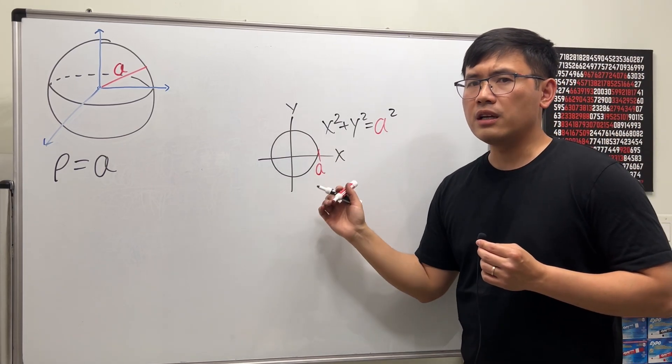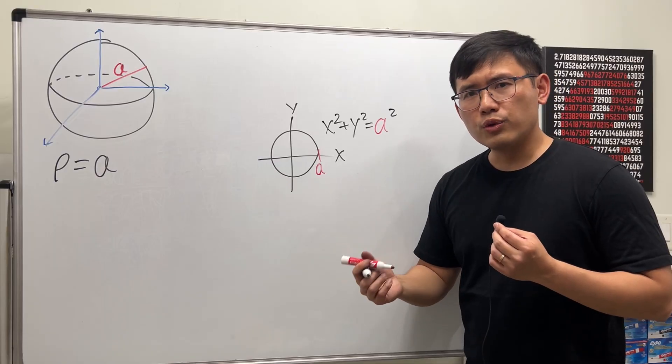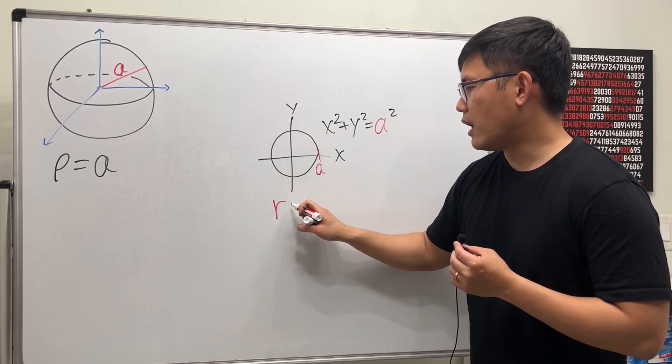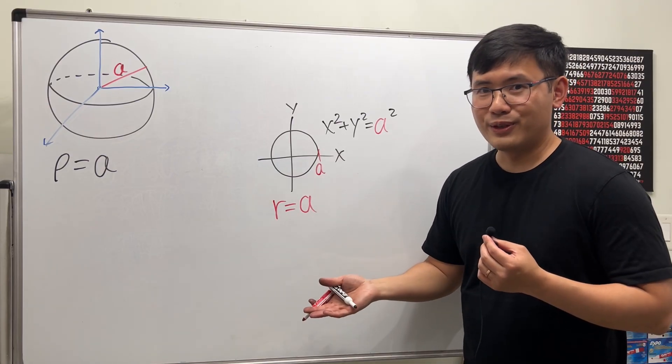But that's the rectangular way. On the xy plane, you can also do the polar way. And for the polar way, you can just tell me r is equal to a, and then we are done, right?